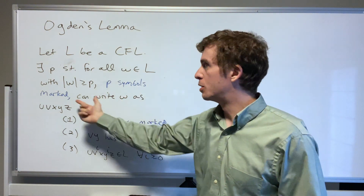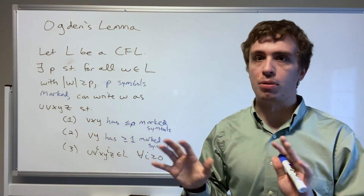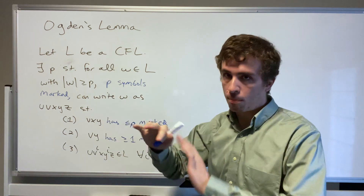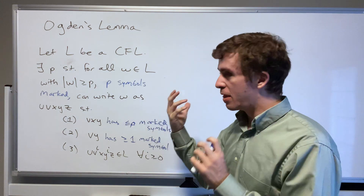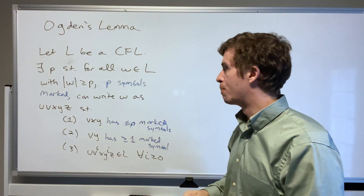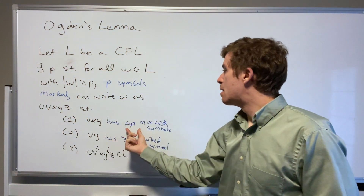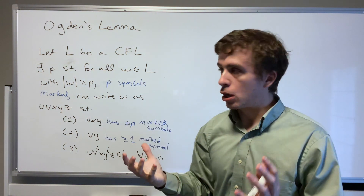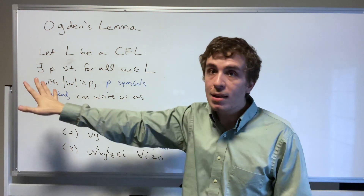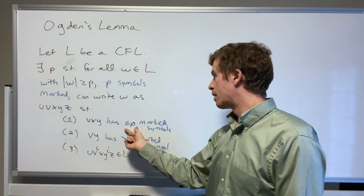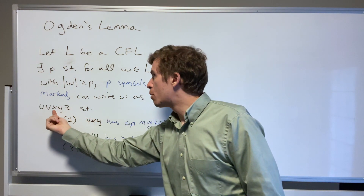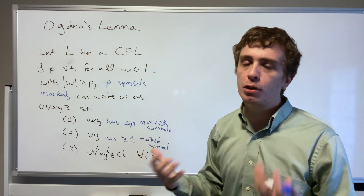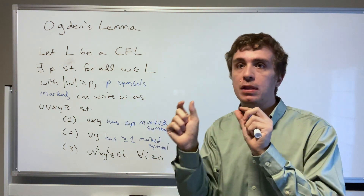We're going to say that we have p symbols of w marked. 'Marked' just means we're going to denote certain characters of w — you can mark them in any way you wish. Then there's a way to write that string w into five parts, just like the pumping lemma, such that the three middle pieces don't have too many marked things — at most p. Then if we extract the middle piece out, taking the second and fourth pieces, it must have at least one marked thing.